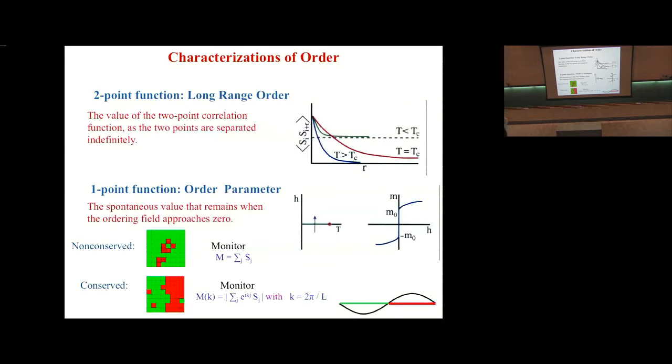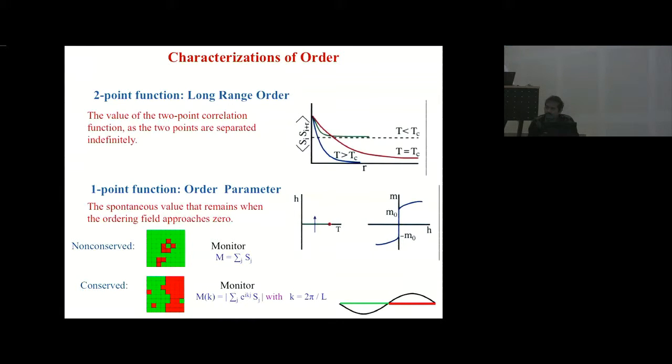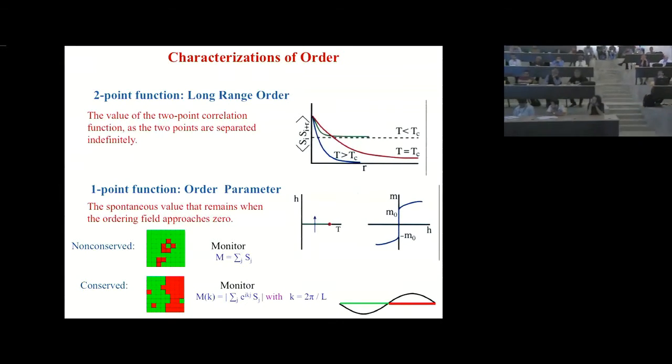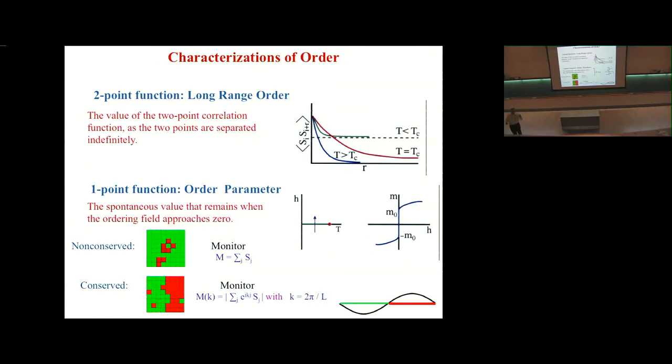If you find that the correlation falls to zero, you say you don't have long-range order. But if the correlation falls to a finite value, then you say you do have long-range order, and that is one characterization of having ordering in the system.